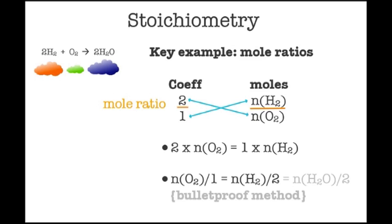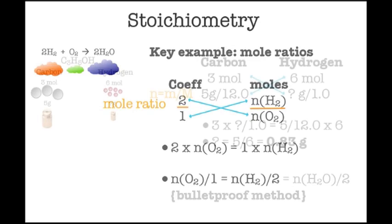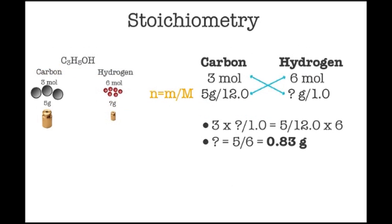The second example sets up headings of carbon and hydrogen for the fixed proportions in propanol. The extra trick here is to also convert masses to moles by dividing by molar masses. Cross multiplication then gives us 0.83 grams of hydrogen when 5 grams of carbon are present in a sample of propanol.